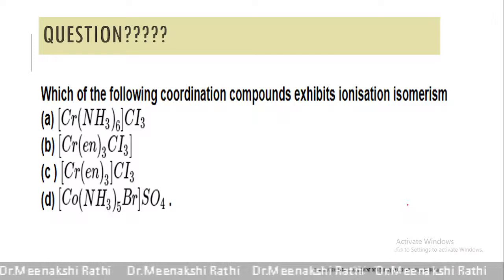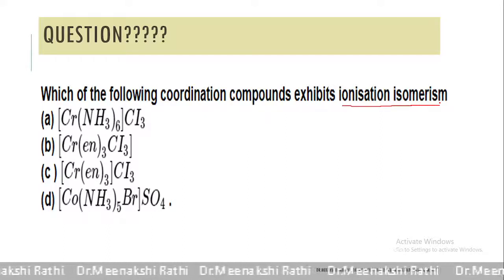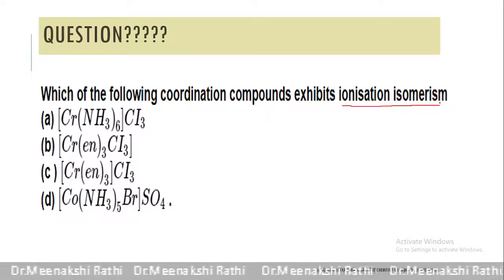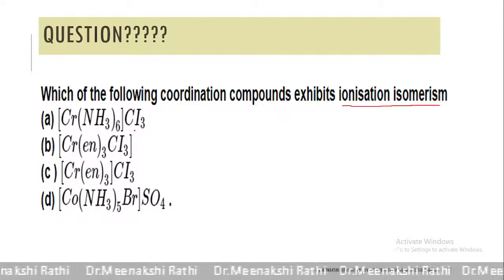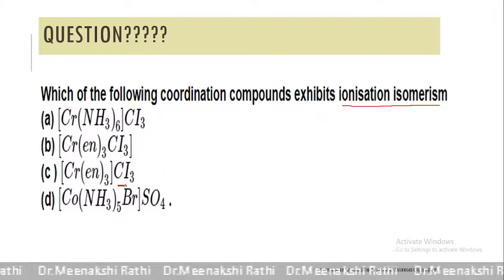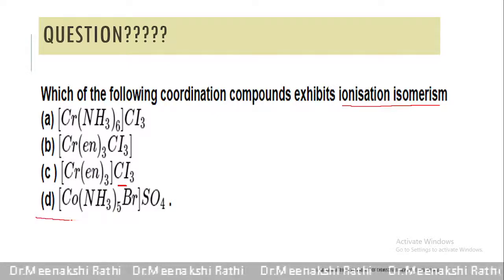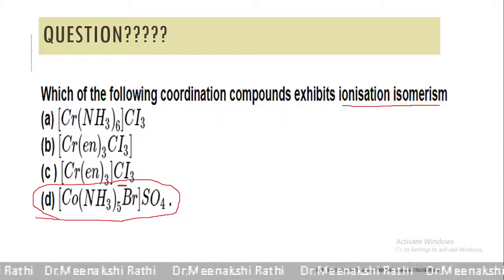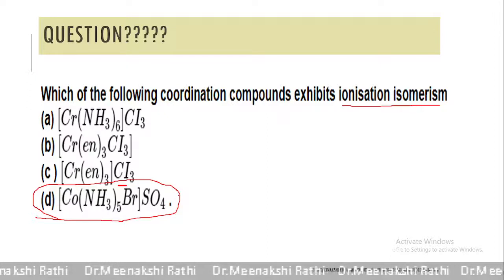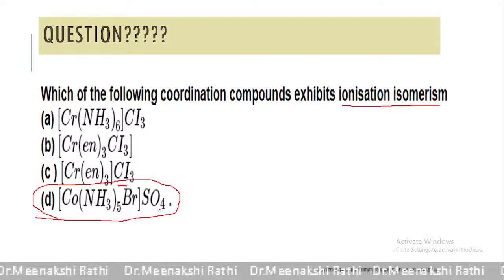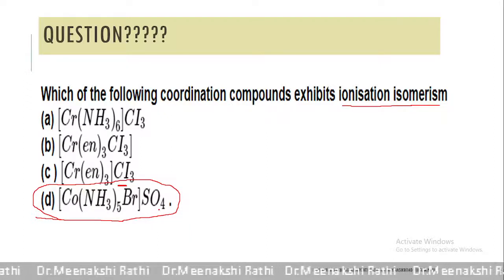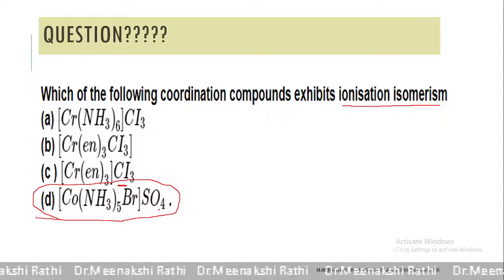One requirement for ionization isomerism is that the complex should have two different ions. In the first case there are only chloride ions; in the second there are no ions; in the third case all ions are the same. But in the last option, if we write sulfate ion outside it gives sulfate ion in solution, while if we write bromide ion outside it gives bromide ion in solution — so the last one exhibits ionization isomerism.